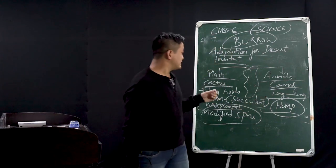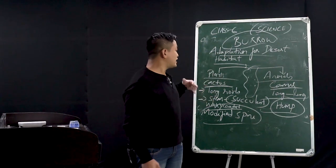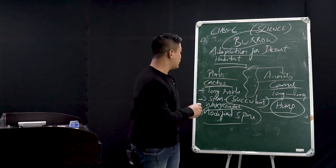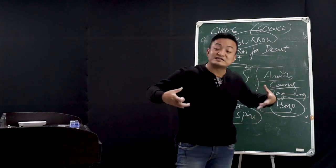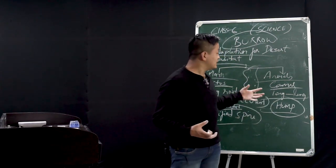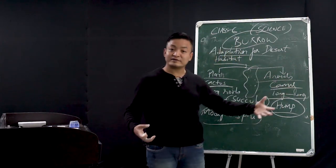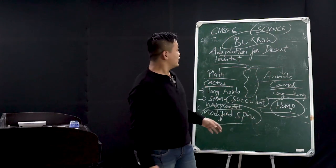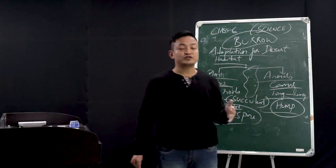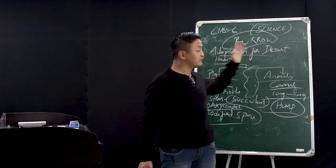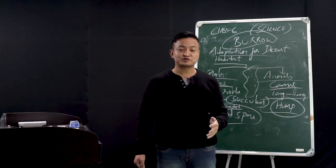You have to remember examples like cactus, camel, and some rats and snakes. Remember how the roots and stem of cactus function, what the hump is for, and what the use of long legs is in a camel. Note down the important points. We will continue with adaptation for aquatic habitat and grassland habitat in our next class. Thank you so much, students.